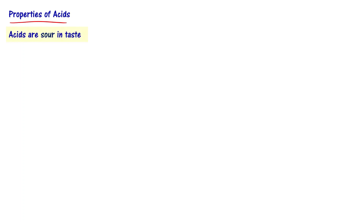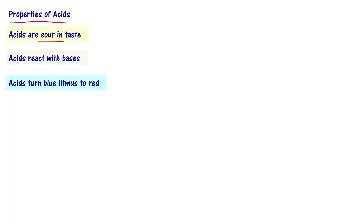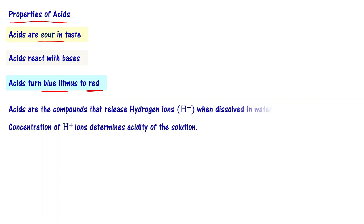What are the properties of acids? We already learned that acids are sour in taste. Acids react with bases. Acids turn blue litmus to red. Acids are the compounds that release hydrogen ions, H+ ions, when dissolved in water. The concentration of H+ ions is going to determine the acidity of the solution.